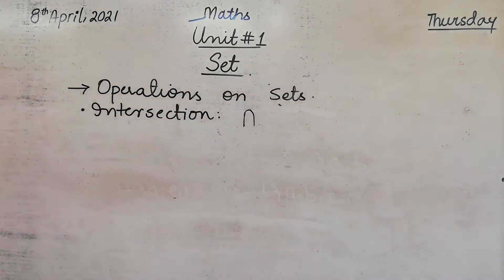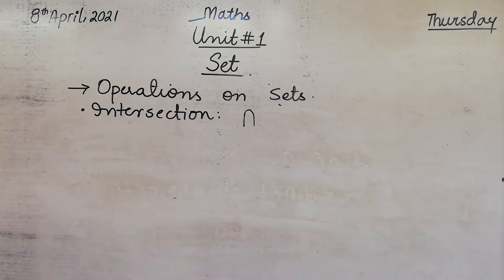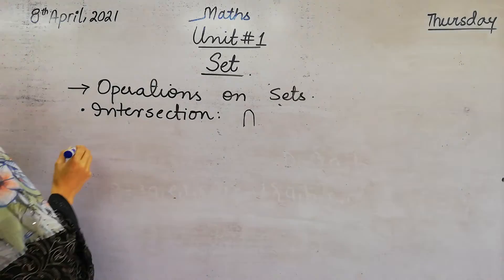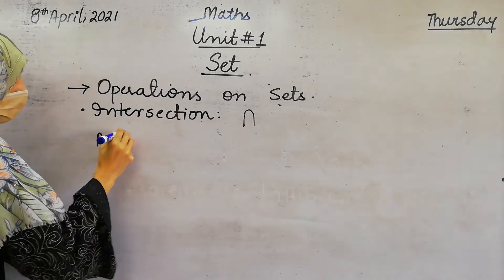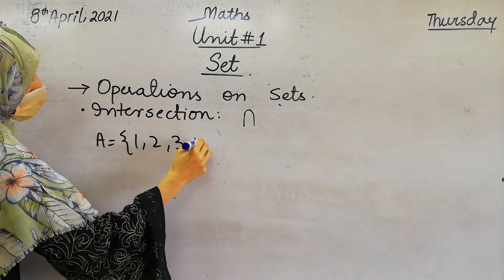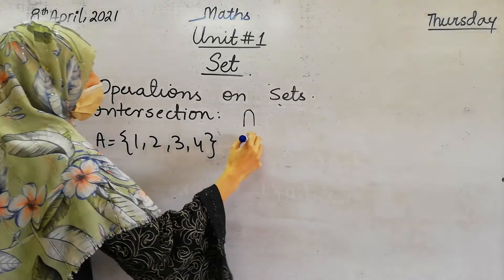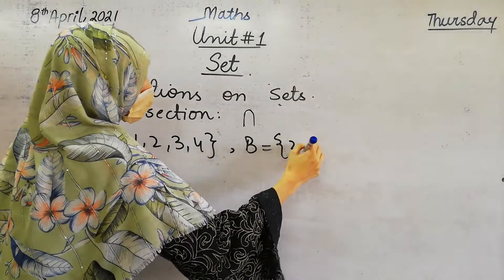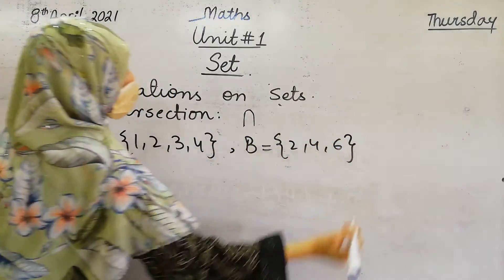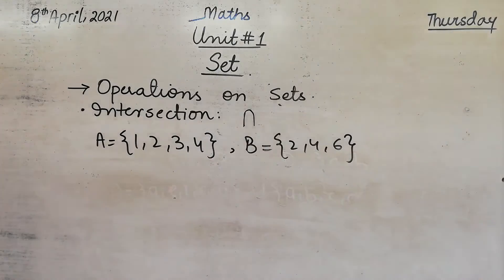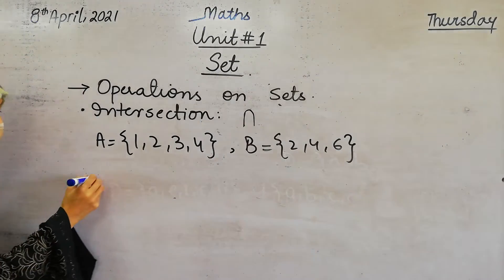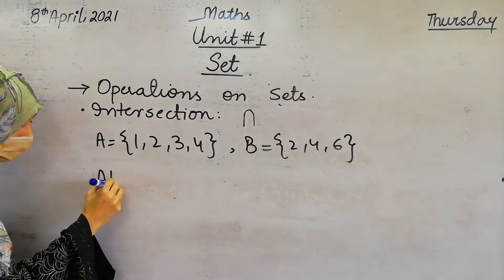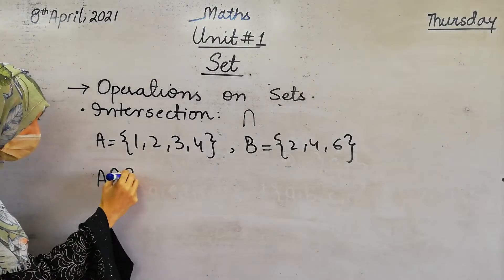What was the sign of intersection? In union, we got all the elements of both sets. In intersection, we will see. For example, set A contains 1, 2, 3, 4 and set B contains 2, 4, and 6. So to find out the intersection of A and B, we will write A intersection B.